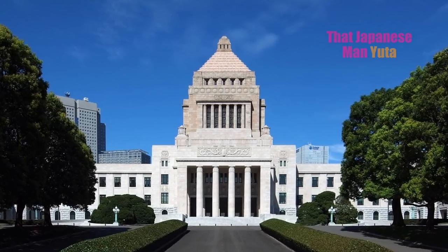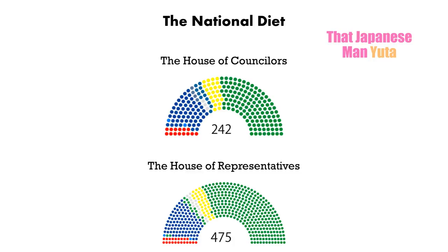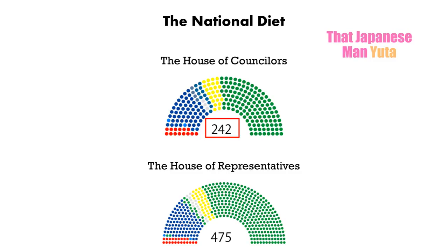For example, in Japan we don't have a president, but we have a prime minister instead. But we don't vote for the prime minister directly. Our prime minister is elected by members of the parliament, or what we call the National Diet. The National Diet of Japan consists of two houses: the House of Councillors and the House of Representatives. Many countries have a similar system. The House of Councillors has 242 seats and the House of Representatives has 475 seats, and the House of Representatives gets more attention because it has more power.